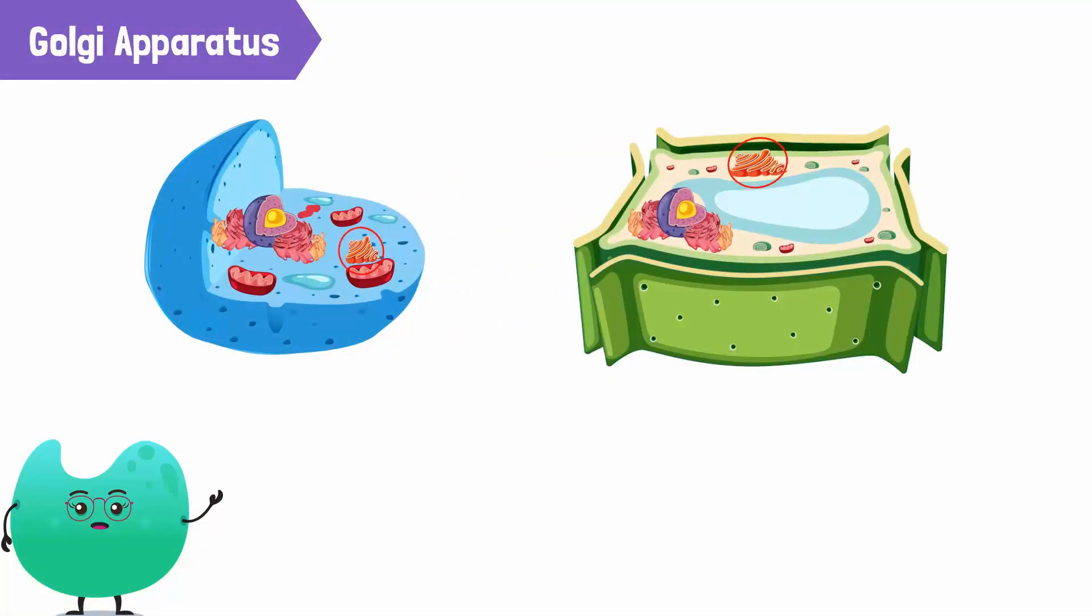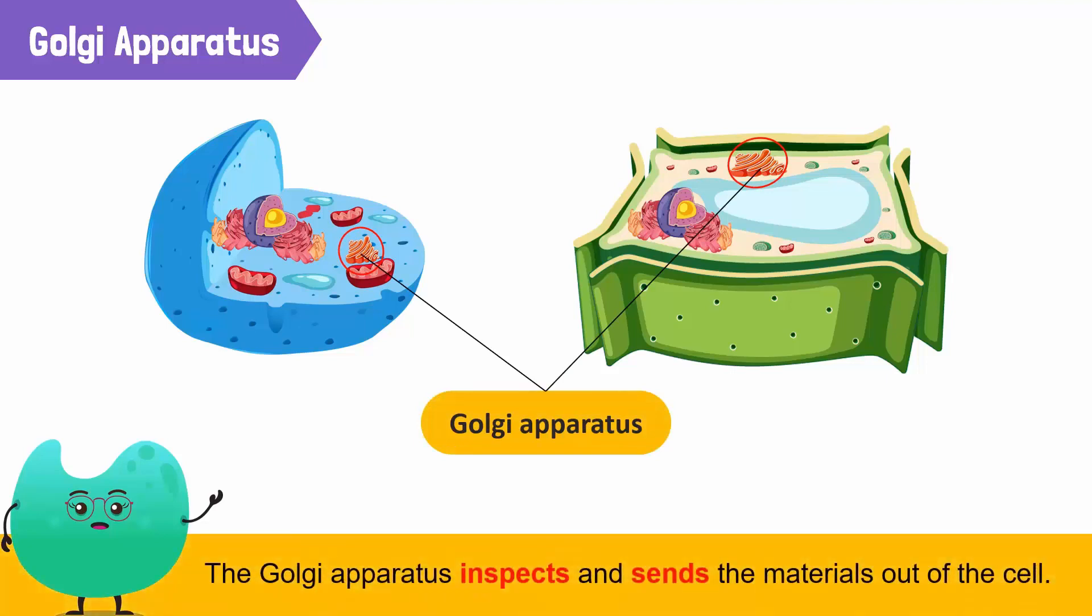The Golgi apparatus is the post office of the cell. It takes materials like protein in the cell, inspects them, and packages them for transportation out of the cell.